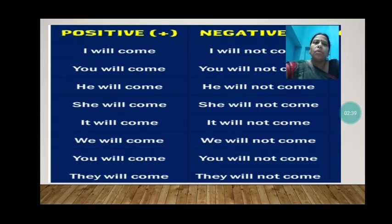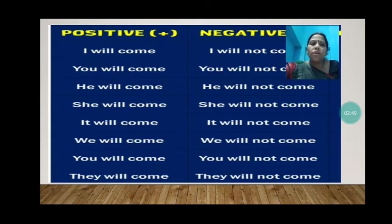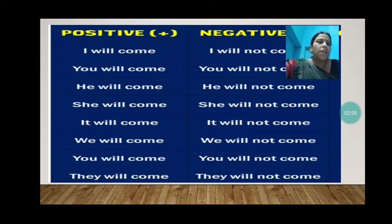So here also, children, the same thing. Only we have added 'not' with 'will' and made the sentence negative. I, you, he, she, it are singular pronouns. We, you, they are plural pronouns. And there is no change — only 'not' is added to make the sentence negative.